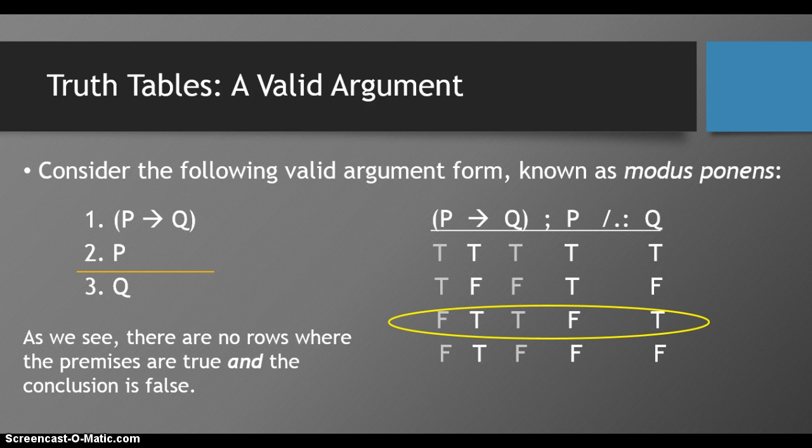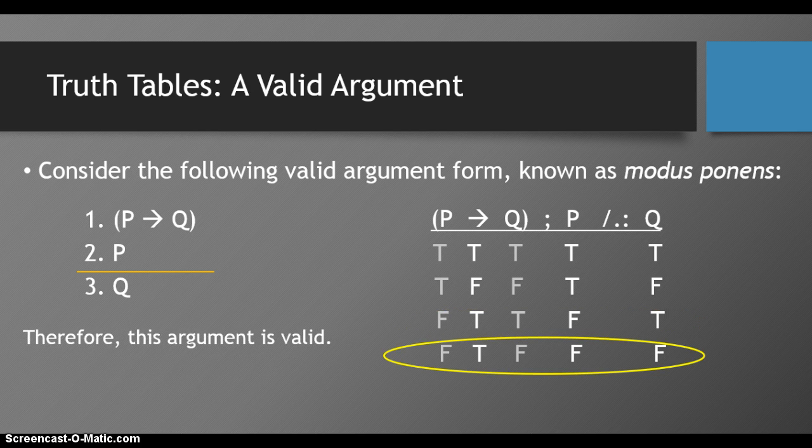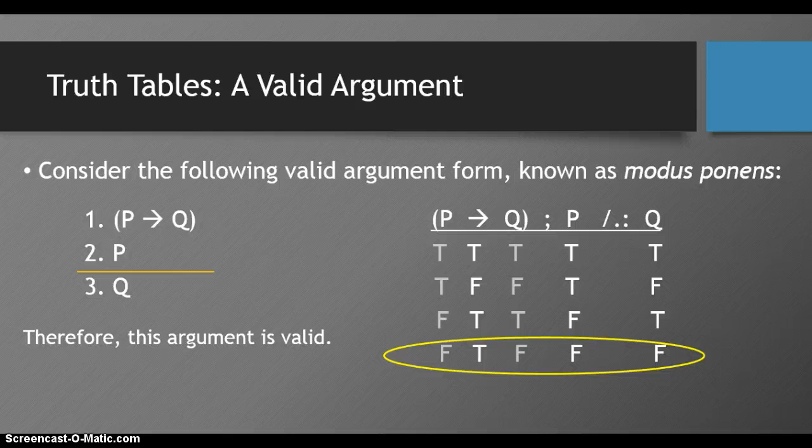Similarly with rows 3 and 4, not all of the premises are true. So it's not the case that in any row that all the premises are true and the conclusion is false. Even though in rows 2 and 4 the conclusion is false, since not all the premises are true, this doesn't invalidate the argument.